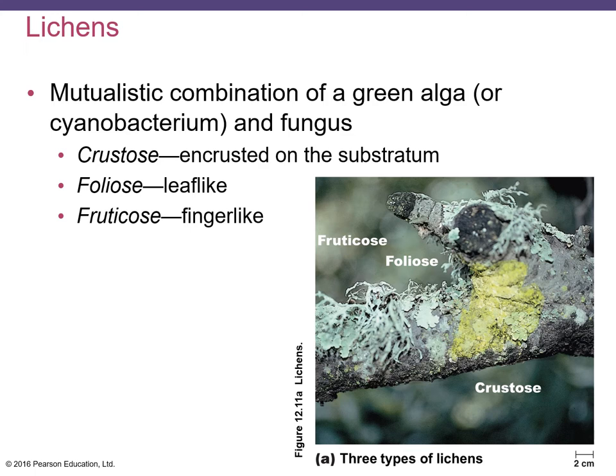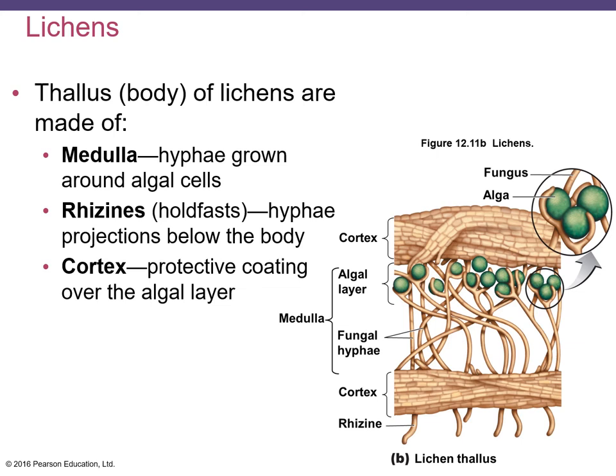Lichens are also found on trees, concrete structures, and rooftops. They are some of the slowest growing organisms on earth. Lichens can be grouped into three morphological categories: crustose lichens, which grow flush or encrusted onto a substratum; foliose lichens, which are more leaf-like; and fruticose lichens, which have finger-like projections.